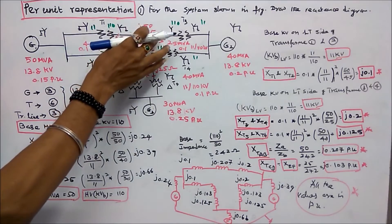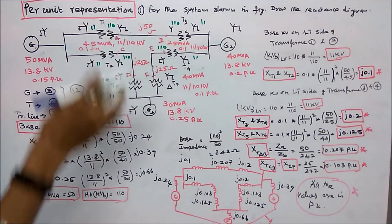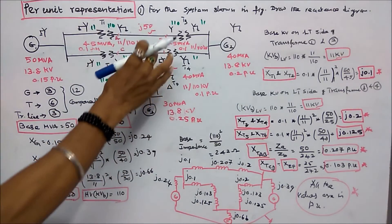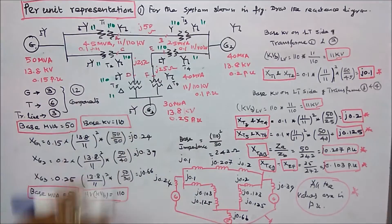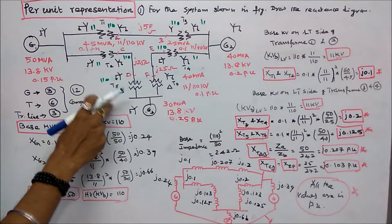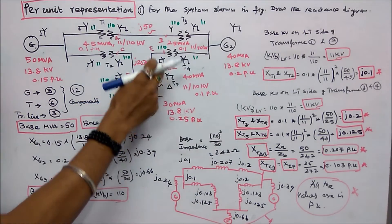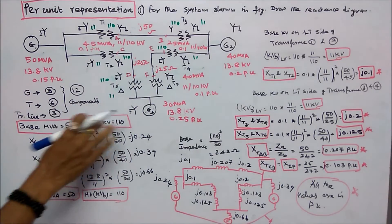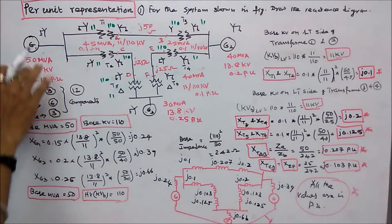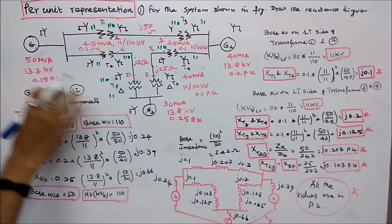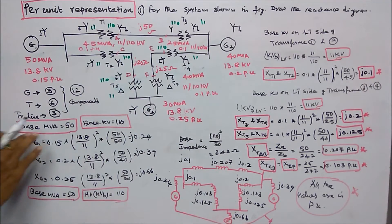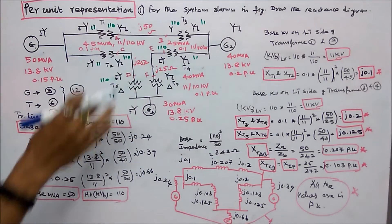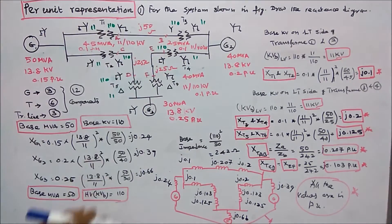The transmission voltage is 110 kV throughout. The LT side is 11 kV. The first step is to choose base MVA. The largest value is 50, therefore base MVA = 50.